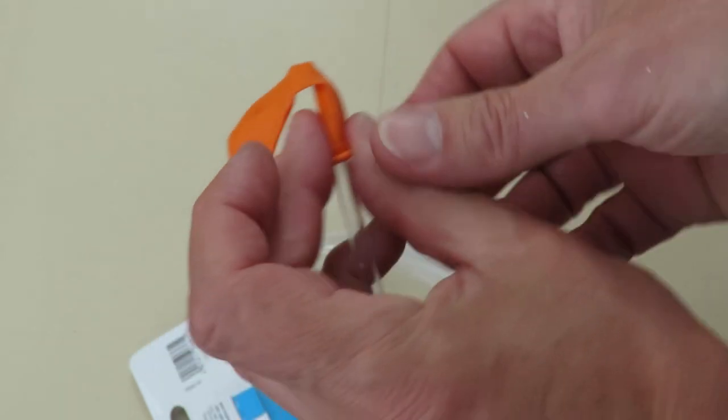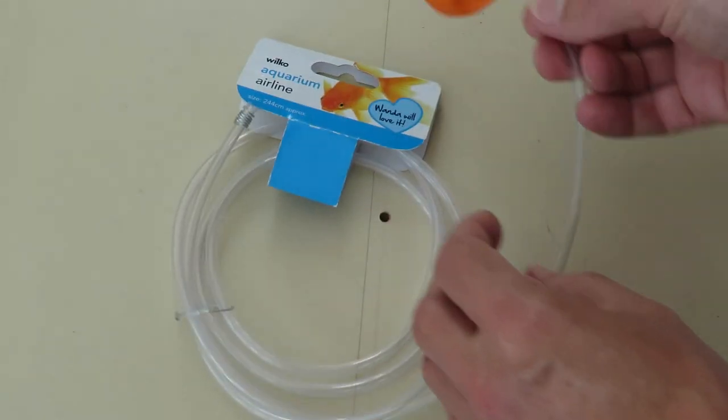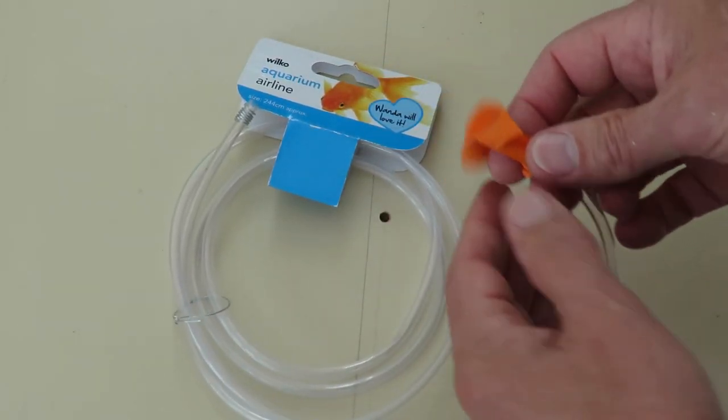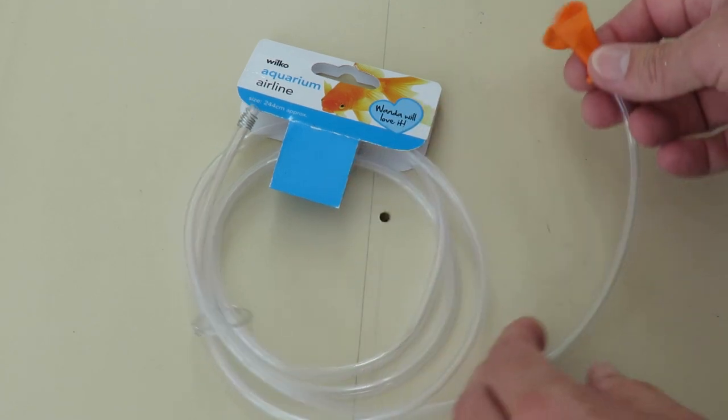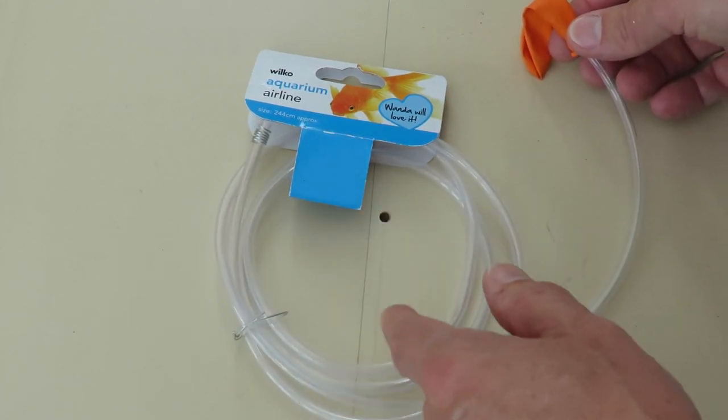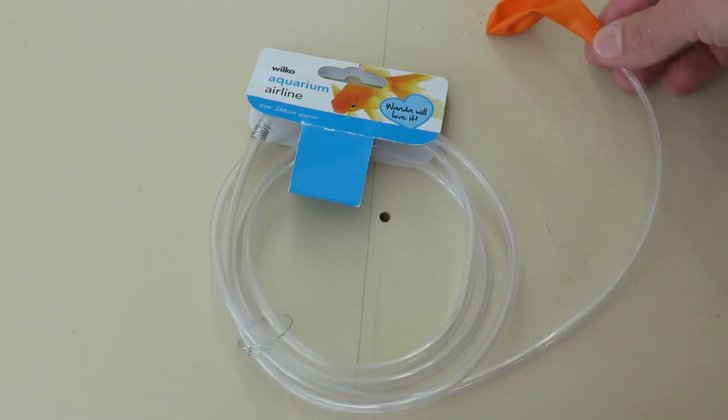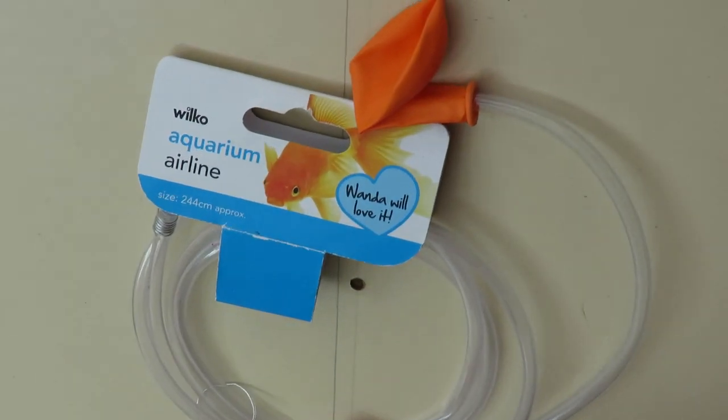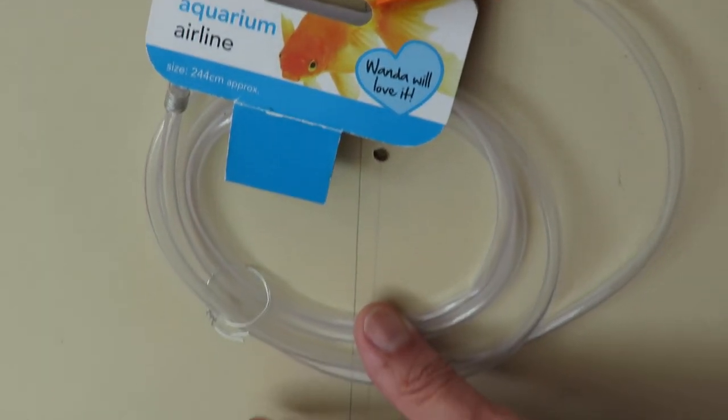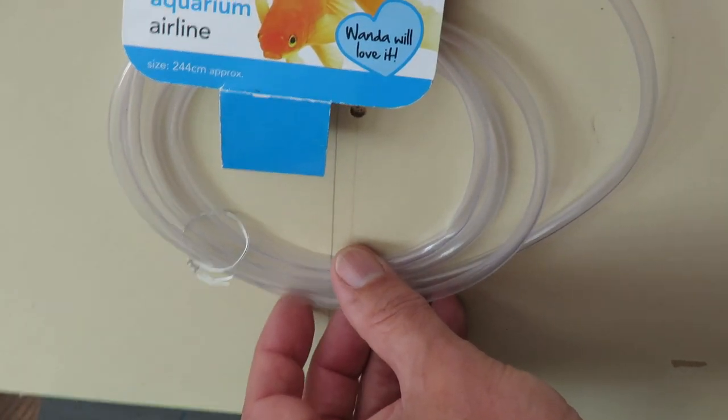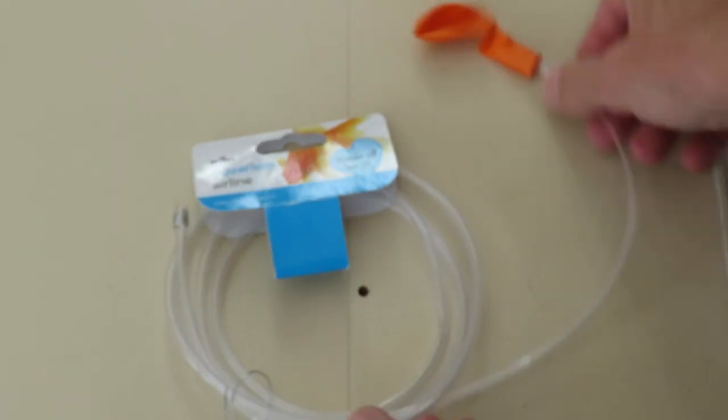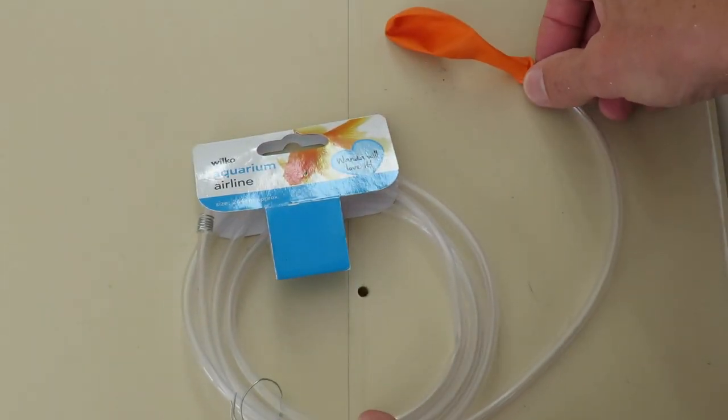Some water in the tube, and then as the air pressure changes that should vary the pressure in the balloon and it should push the water around the tube. Only we'll have it up on end so we've got gravity helping to hold the water in place. So that's the plan.